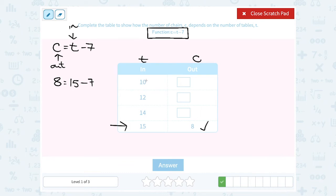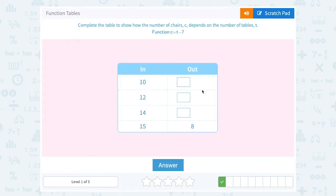So starting with an input of t, that means we're going to put 10 where t was. So we would say c instead of t, we're going to put 10. And our function is telling us to subtract 7 from that. Well 10 minus 7 is 3. So our output would be 3.